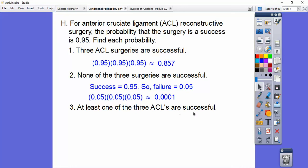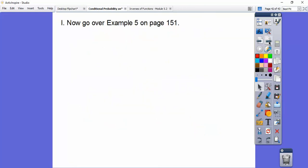At least one of the ACLs are successful. Well, if at least one of them are successful, use the complement rule. It's going to be the complement of that none are successful. And since none are successful is .0001, then it's one minus that. So about 99.99% of the time, one of the three people are going to have success with that.